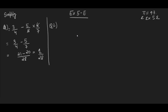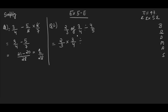Question 2: 2/3 of 3/4 divided by 4/5. You have the rule BODMAS — Bracket, Of, Division, Multiplication, Addition, Subtraction. There is no bracket here, so you solve the 'of' operation first: 2/3 into 3/4. The 3s cancel, leaving 1/2. Then division is converted to multiplication, so divided by 4/5 becomes multiplied by 5/4, giving 5/8.